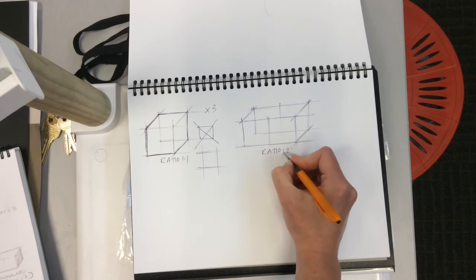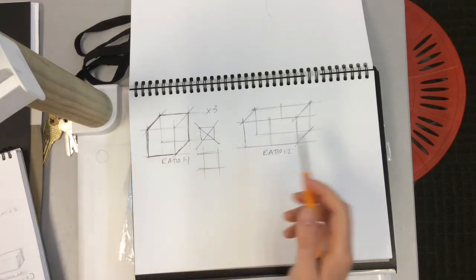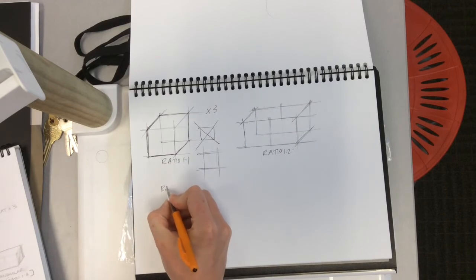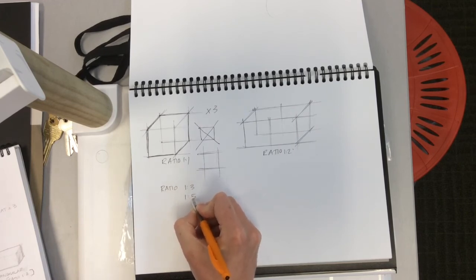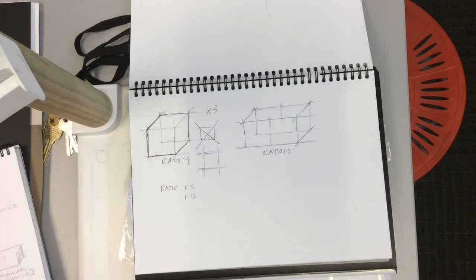We've got ratio 1:1 here, ratio 1:2 there. Once you're comfortable with these two ratios, I want you to mix it up and try out ratio 1:3, 1:5.